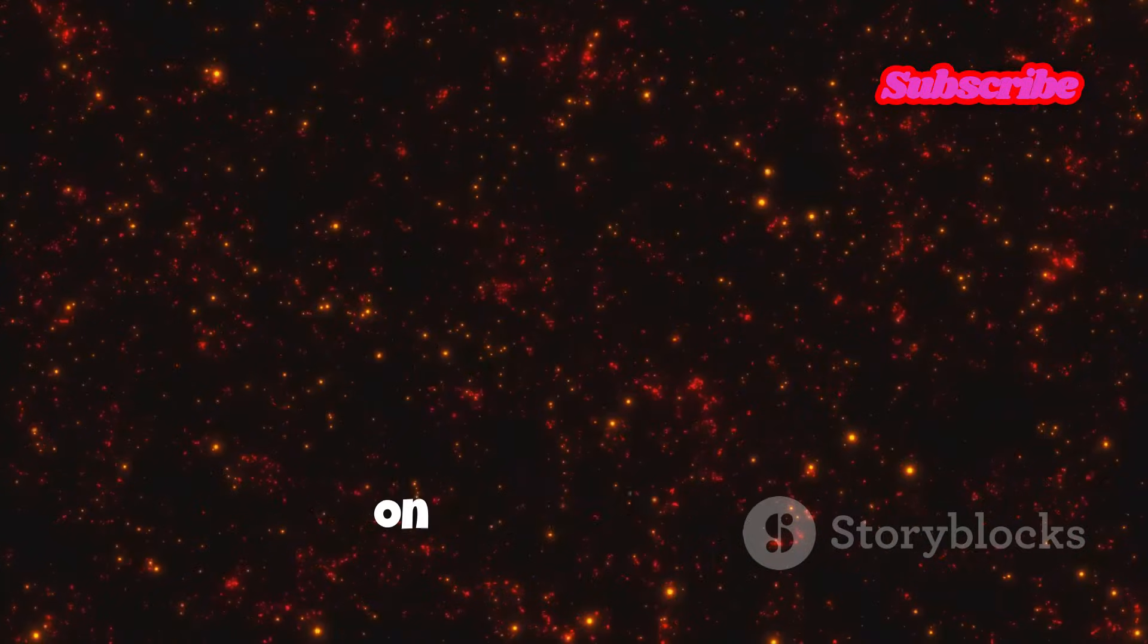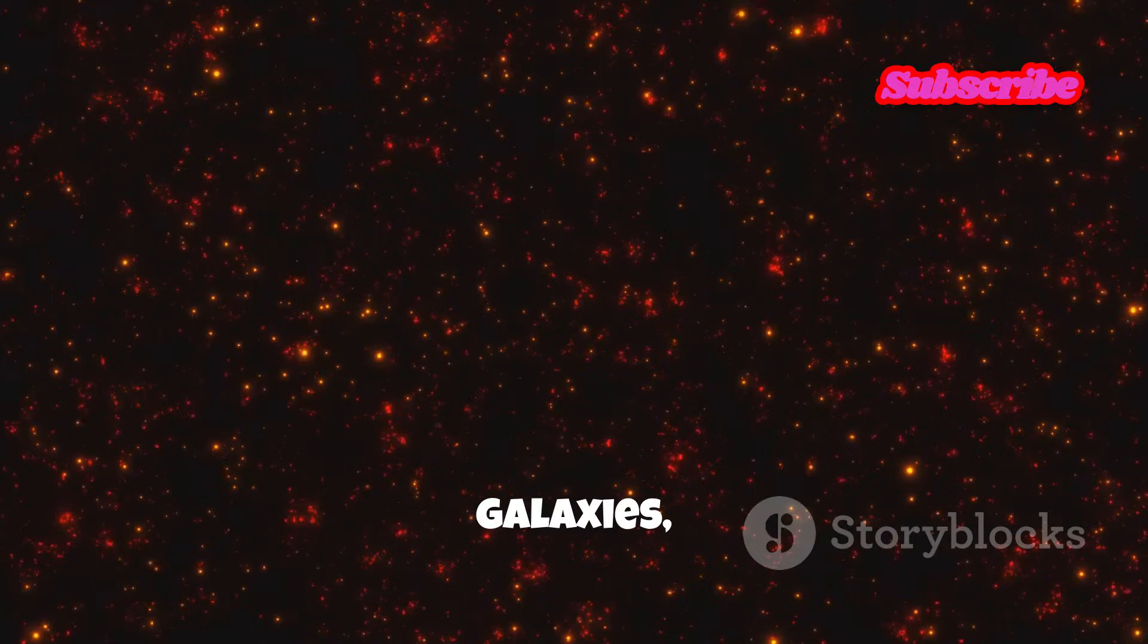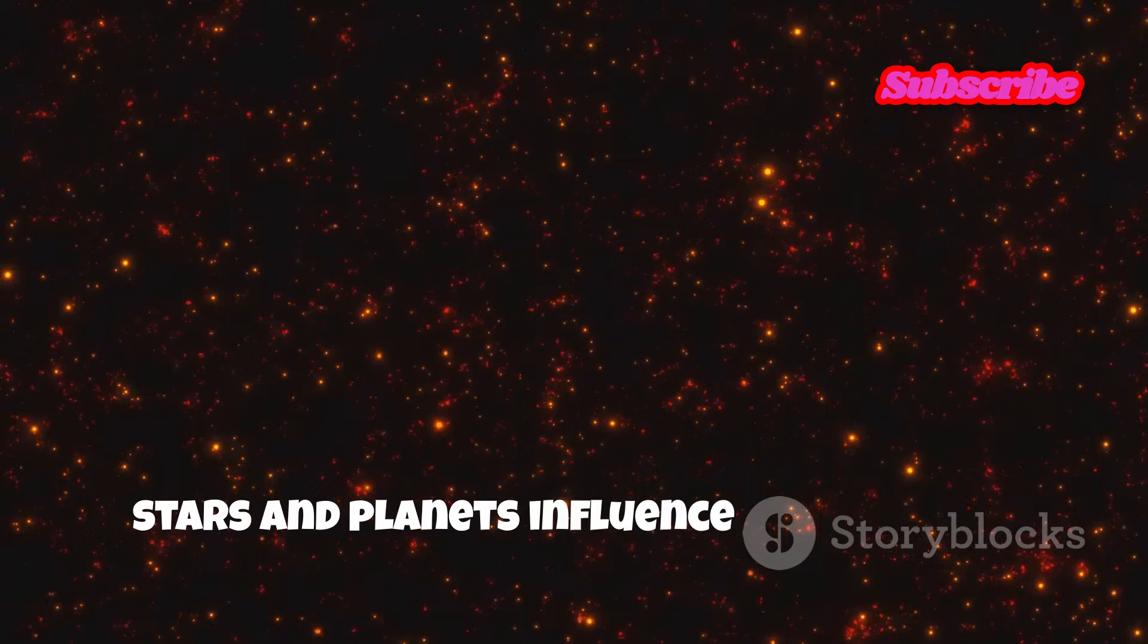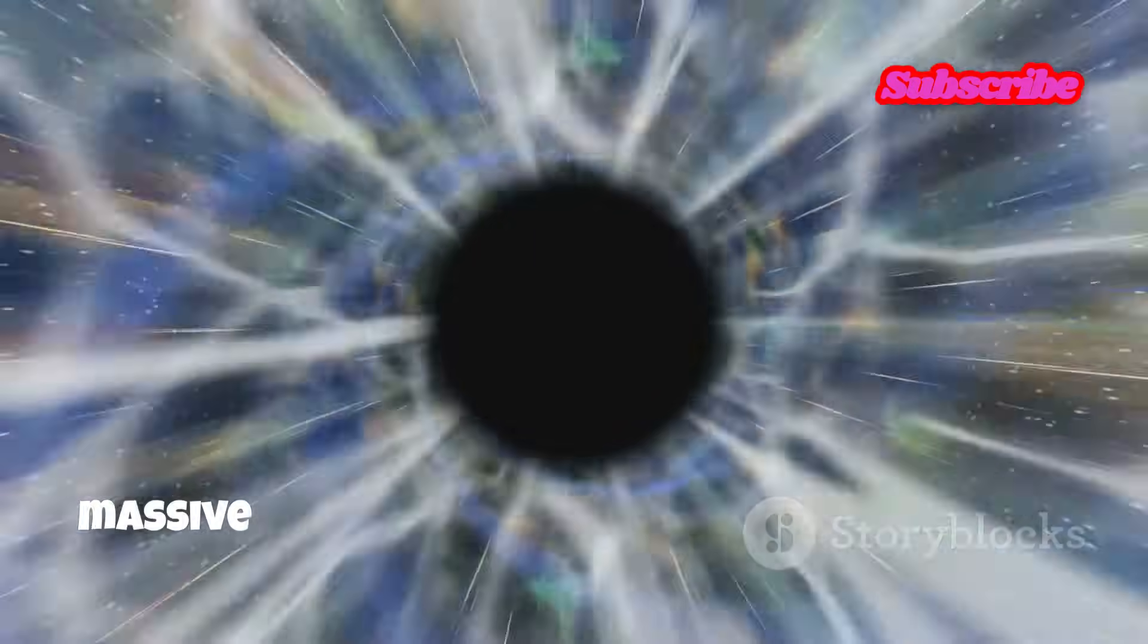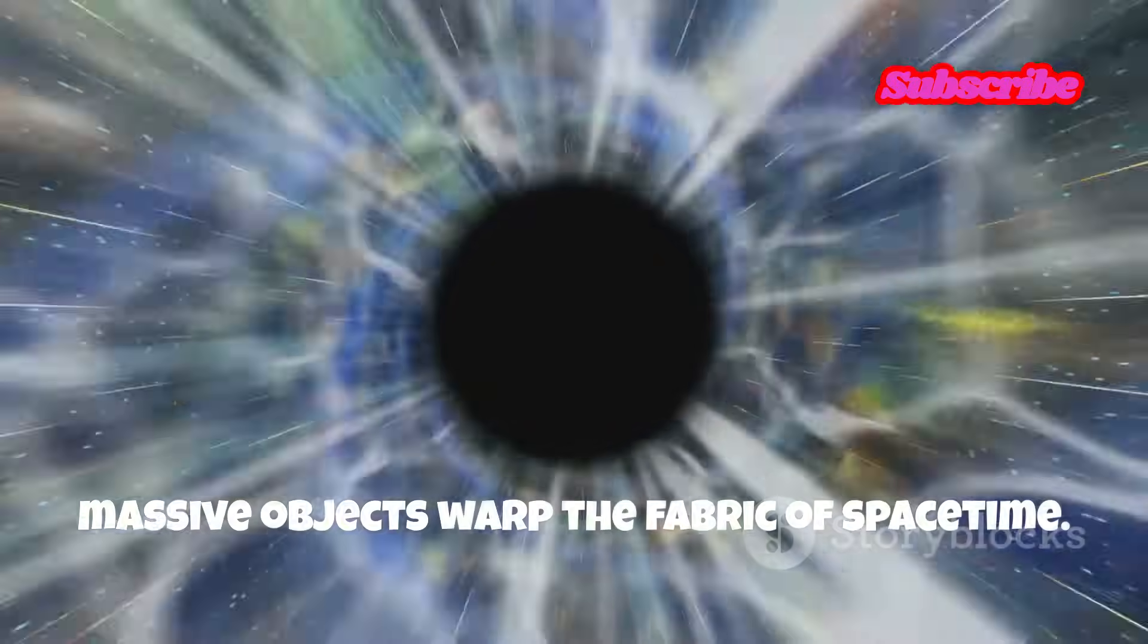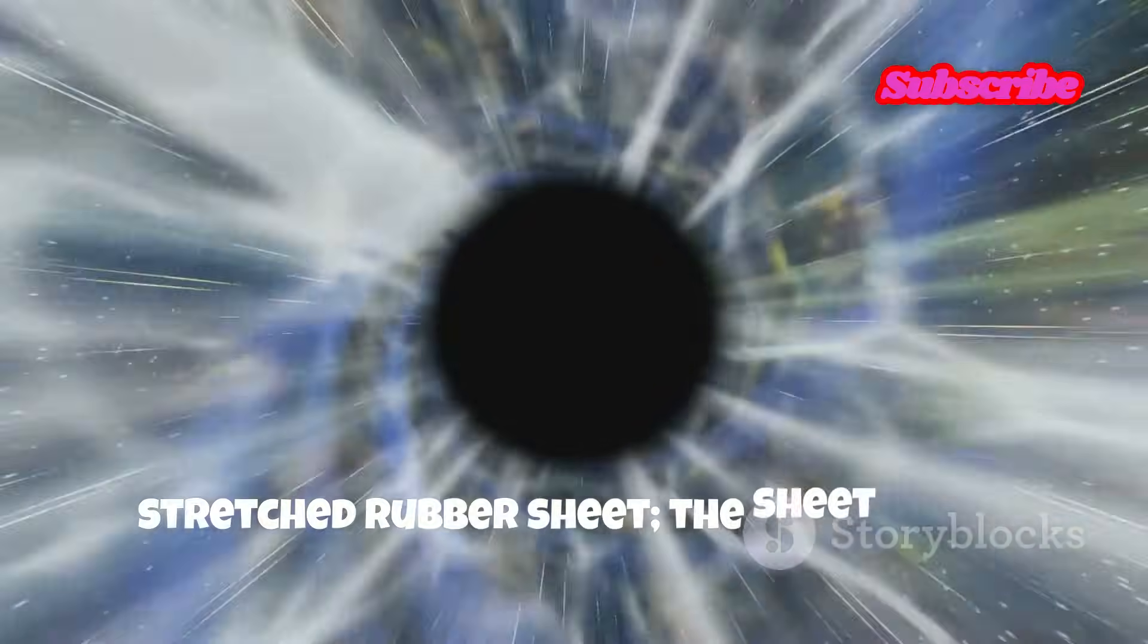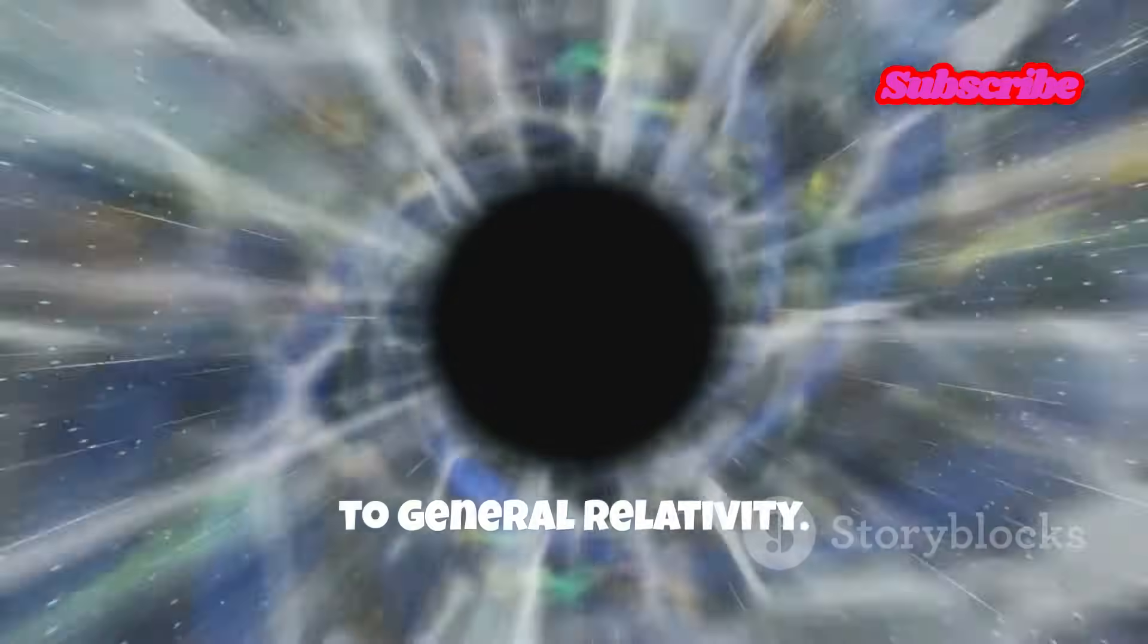General relativity, on the other hand, explains the large-scale universe of stars, galaxies, and gravity. It describes how massive objects like stars and planets influence the fabric of space and time. It's like a giant trampoline where massive objects warp the fabric of space-time. Imagine placing a heavy ball on a stretched rubber sheet. The sheet bends around the ball, and this is how gravity works according to general relativity.